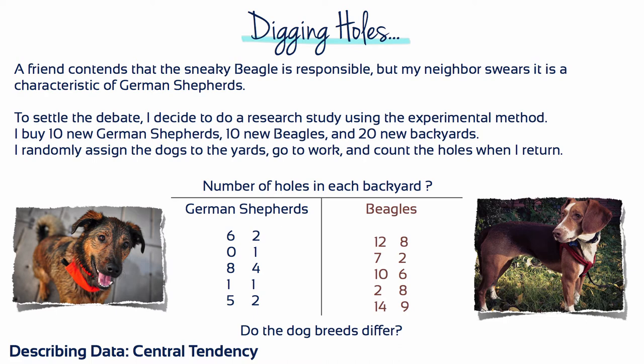To settle the debate, I decide to do a research study using the experimental method. I buy 10 new German Shepherds, 10 new beagles and 20 new backyards. I randomly assign the dogs to the yards, go to work and count the holes when I return.